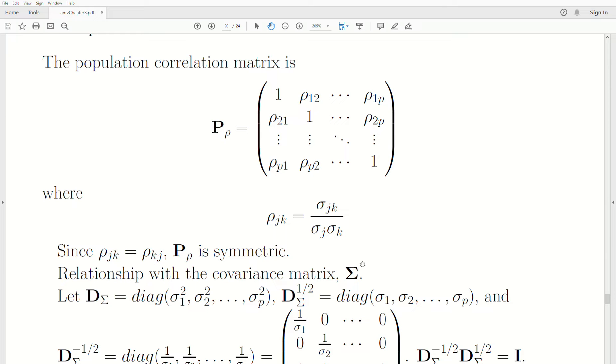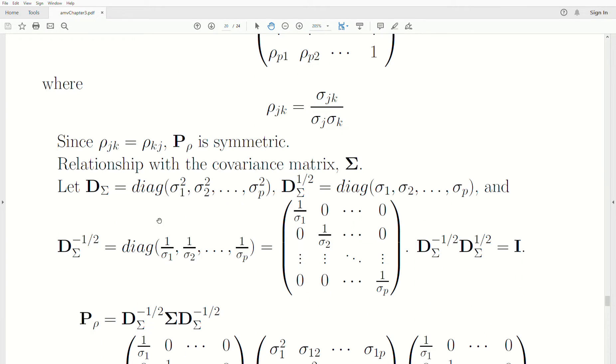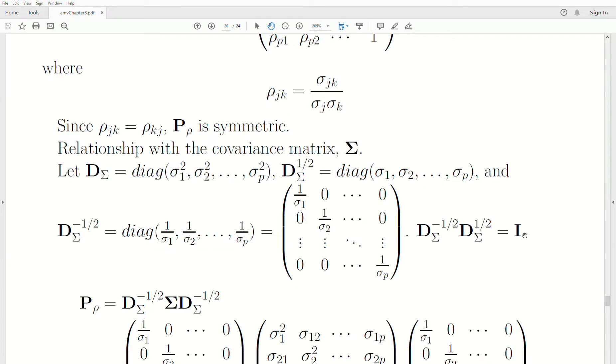Since covariance is part of the definition of correlation, it's not surprising that sigma plays a part in the definition. If we create a diagonal matrix called D sub-sigma, which is just the variances for each variable down the diagonal, we can create a square root matrix of it, which takes the square root of all the diagonal elements. So it's the standard deviations of each variable. And the inverse of the square root matrix is just one over those diagonal entries. These two matrices are inverse of each other. They equal the identity matrix.